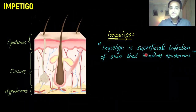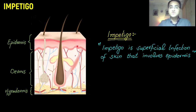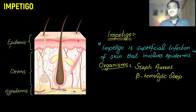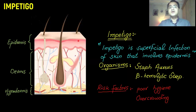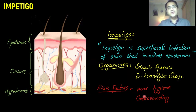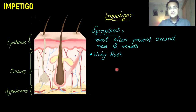Impetigo is basically a superficial infection of the skin that involves the superficial layer, the epidermis. It is caused by Staphylococcus aureus and beta-hemolytic Strep. Risk factors include poor hygiene and overcrowding. Symptoms of impetigo start around the nose and mouth, and it is an itchy rash.